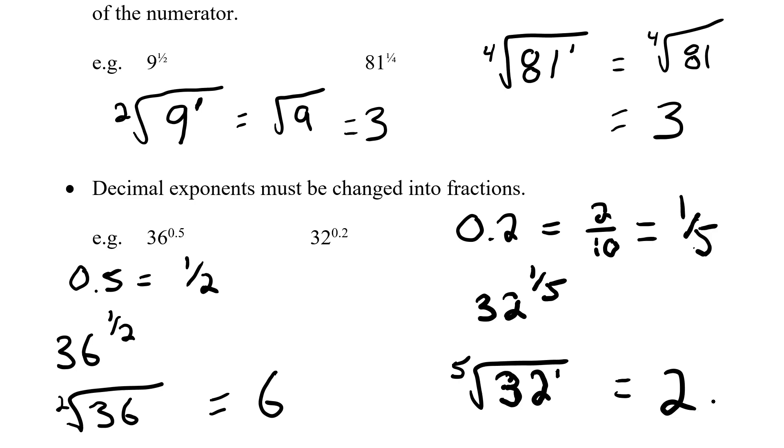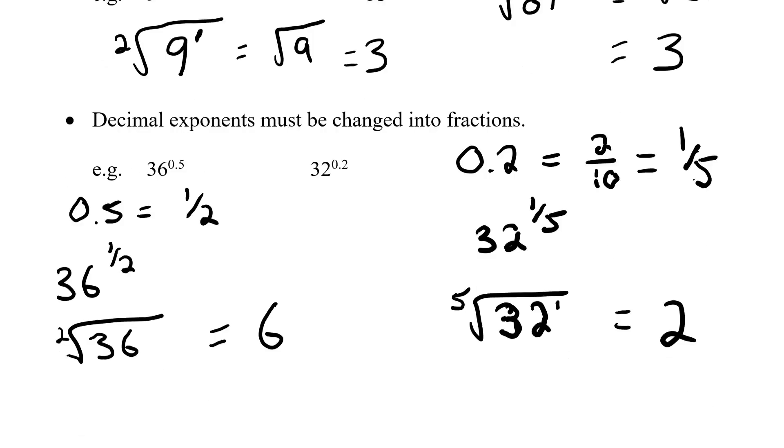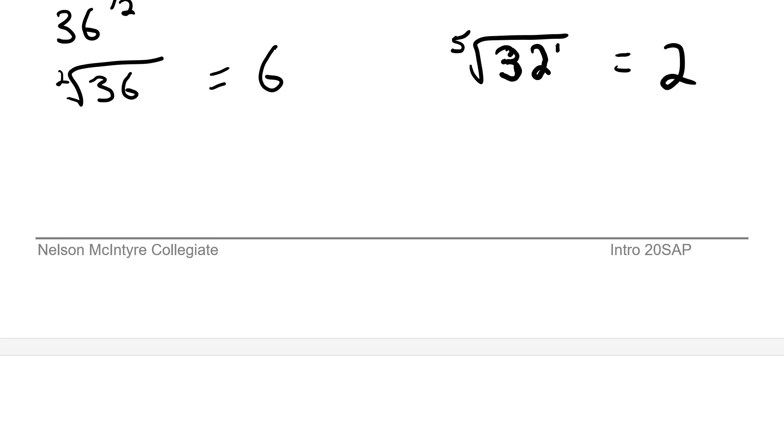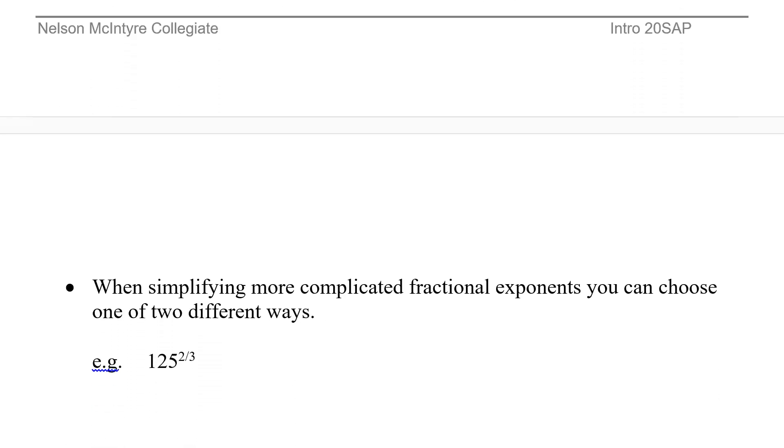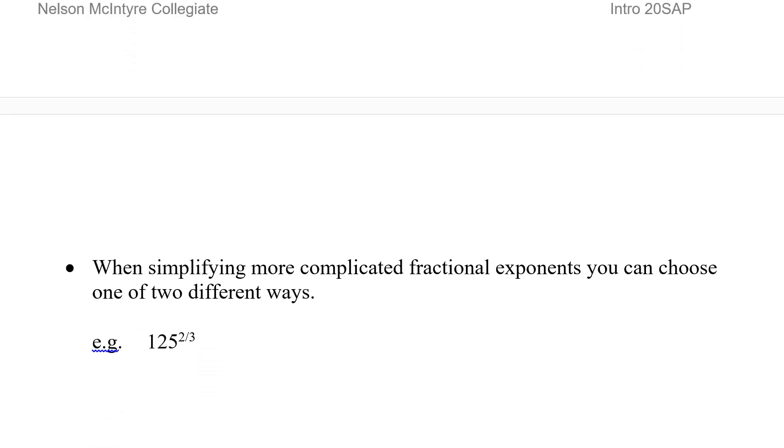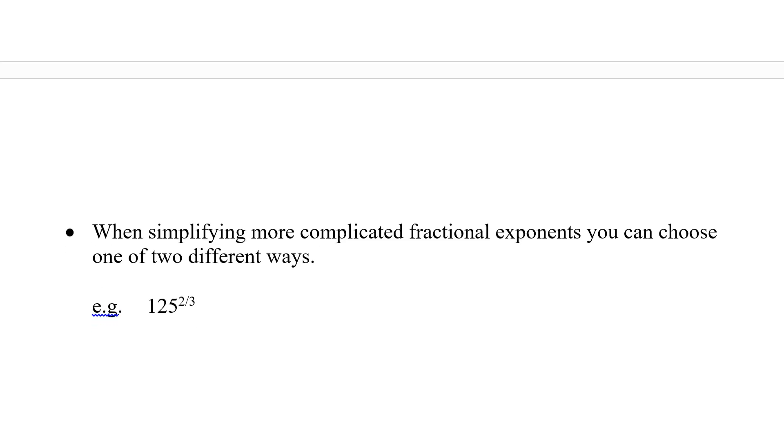So up until now we've been dealing with some fairly simple fractions. In fact, all of our numerators have been 1. Well, what happens if we get a little more complex fraction? When simplifying more complex fractions, you can choose to do it two different ways. So we've got our basic idea here, 125 to the exponent 2 thirds.